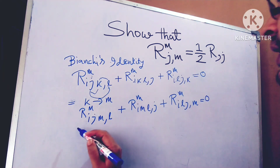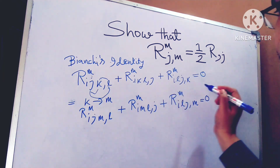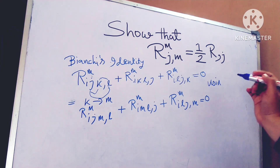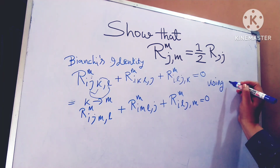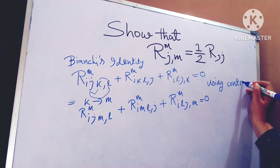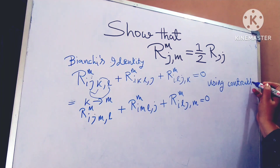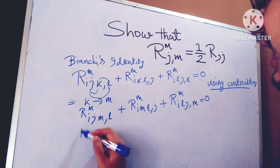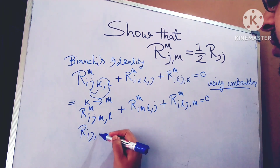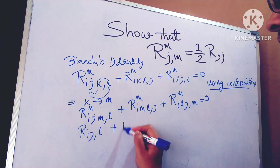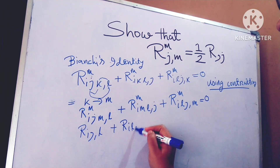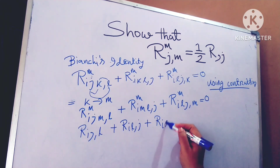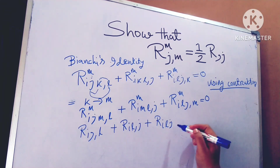I hope it is clear for everyone. Now, using the contracting principle, I get R_IJ comma L plus R_IL comma J plus R_ILJM comma M equals to 0.